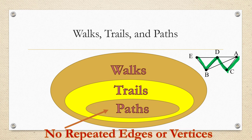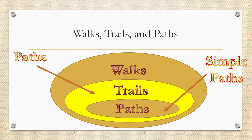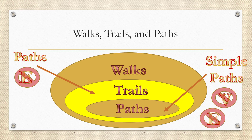By the way, if you start and end at the same vertex that's okay — that's not considered a repeat. As I mentioned in a previous video, not all graph theory books have the same terminology. Some books call trails paths and then call paths simple paths. The important thing is to pay attention to whether repeated edges and vertices are allowed. In this video, trails means walks with no repeated edges, and paths means walks with no repeated vertices or edges.